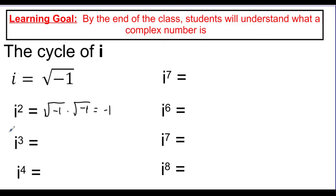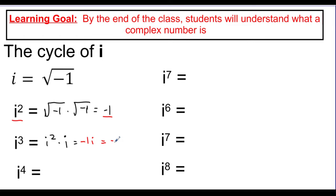Let's try another step. i cubed is the same thing as i squared times i. I split it into two pieces: i squared and i to the first. Since i squared equals negative 1, I can replace it and get negative 1 times i, which is just negative i. So i to the third equals negative i — no more exponent.